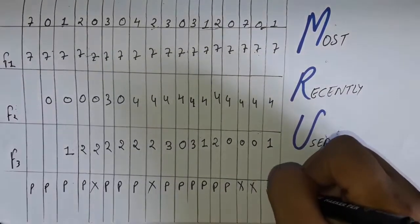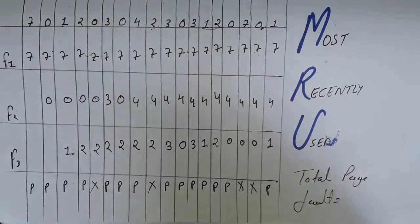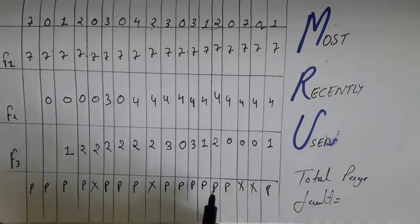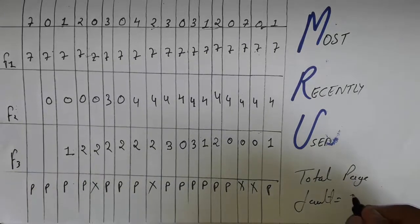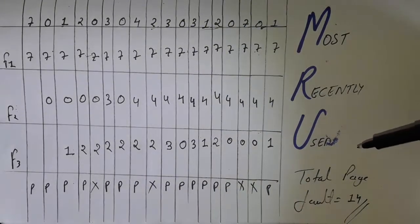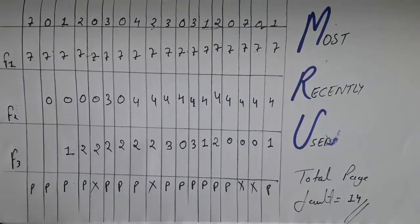This is a page replacement because we replaced 0 by 1. Now we calculate the total page fault — count all the P's: 1, 2, 3, 4, 5, 6, 7, 8, 9, 10, 11, 12, 13, 14. The total number of page faults is 14. This is how you use the Most Recently Used method of page replacement. Hope you liked the video — press like, leave questions or suggestions in the comments, and subscribe for more. Bye!